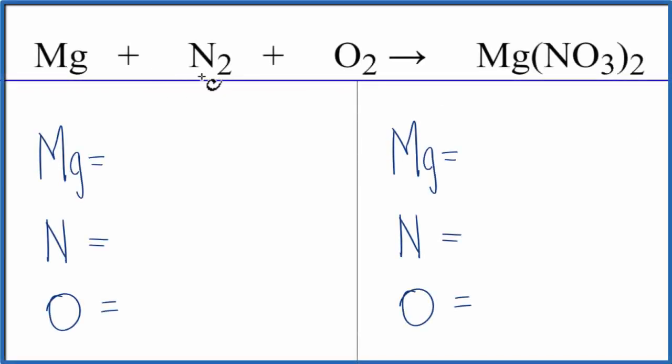To balance the equation Mg plus N2 plus O2 gives us magnesium nitrate. This is a combination reaction. These all come together to form one product.